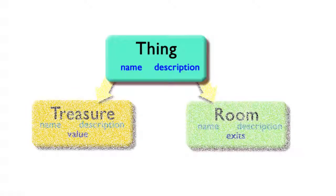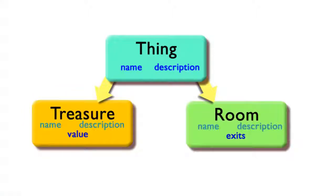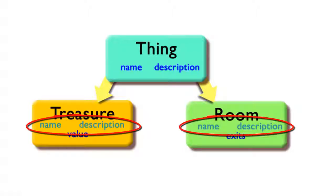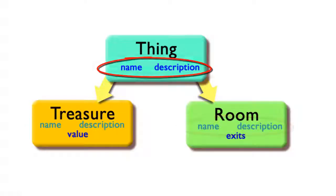So now I decide I need a separate Treasure class and also a Room class, and these will be the blueprints from which individual treasure and room objects can be created. These two have names and descriptions. But since I already have a class that handles those, I decide that I'll make both the Treasure and the Room class as descendants of the Thing class.